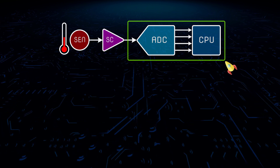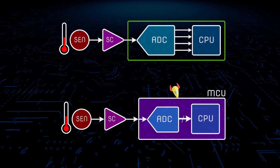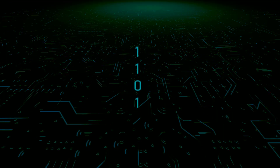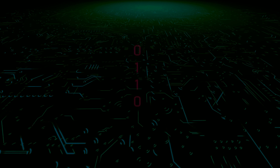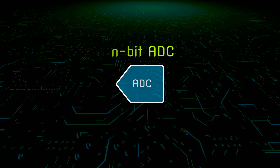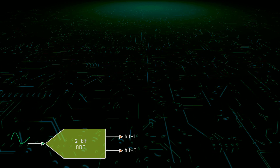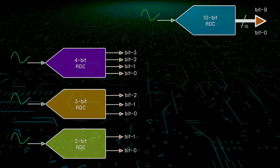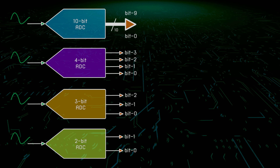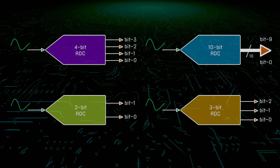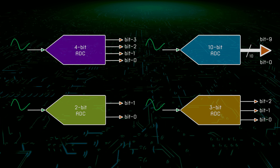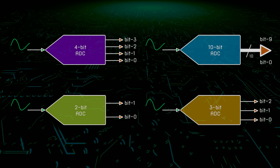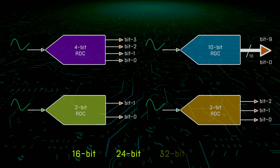All digital parts of our system, including the ADC and the MCU, are embedded in a single chip microcontroller. The output of the ADC is digital data, which is composed of a sequence of bits. Here are some examples of n-bit ADC: a 2-bit ADC, a 3-bit ADC, a 4-bit ADC, and a 10-bit ADC. There is no limitation on the number of bits, but in microcontroller applications today, most ADCs are 10-bit or 12-bit. However, in some microcontrollers, the internal ADC can be up to 16-bit, 24-bit, or 32-bit.